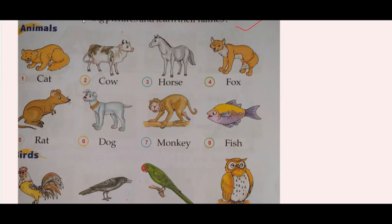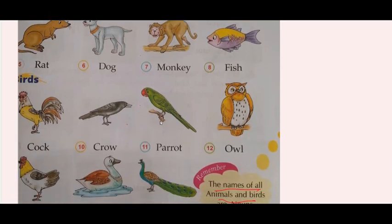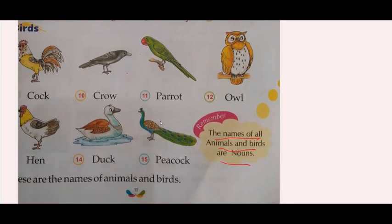Monkey. Fish. Cock — C-O-C-K, cock. C-R-O-W, crow. Parrot — P-A-R-R-O-T, parrot. Owl. H-E-N, hen. D-U-C-K, duck. P-E-A-C-O-C-K, peacock. So what do you have to remember? That the names of animals or birds, they are also nouns. Okay?